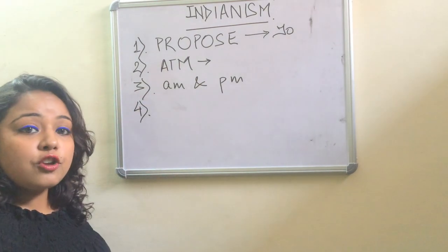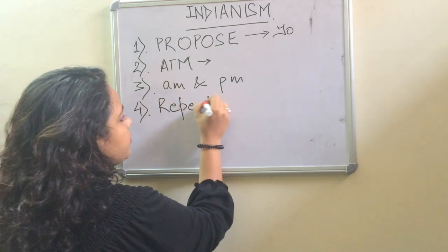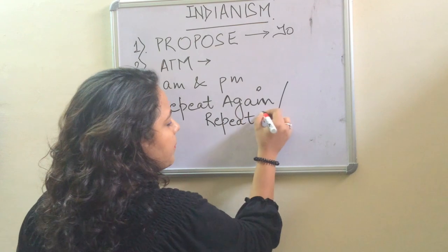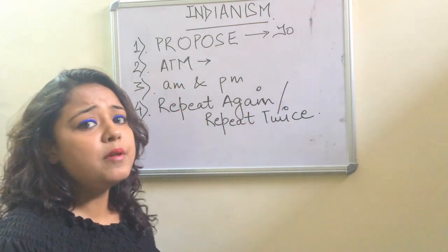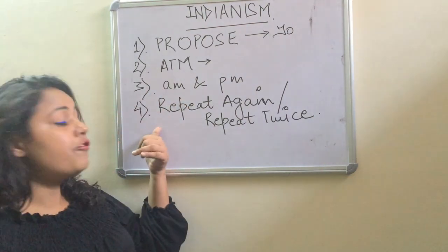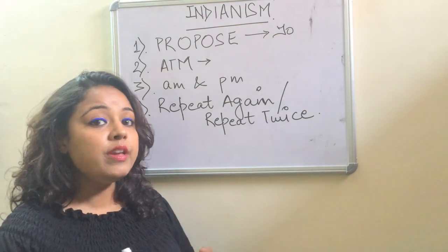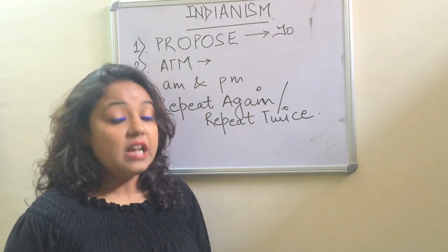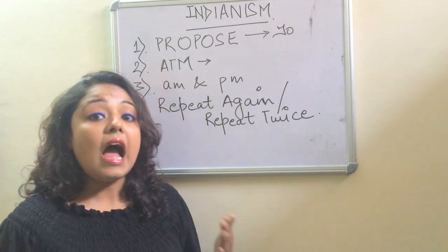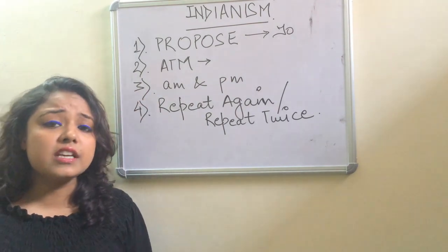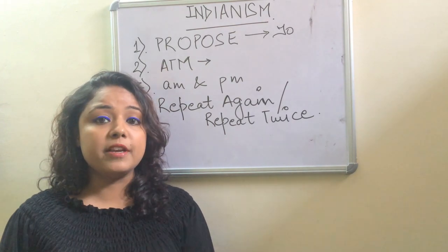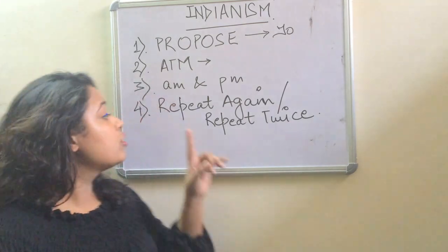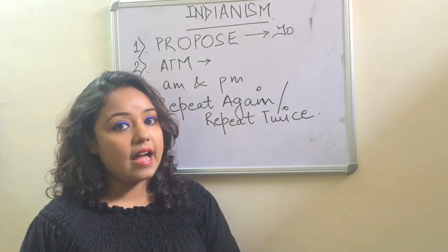The fourth word is 'repeat again' or 'repeat twice.' Repeat already means doing something again, so adding 'again' or 'twice' makes it redundant. The correct statement is simply 'I am repeating the thing for you.' In the rarest case, if you are explaining something for the third time, you can say 'I am telling you this thing a third time.' Do not add 'again' or 'twice' with repeat.